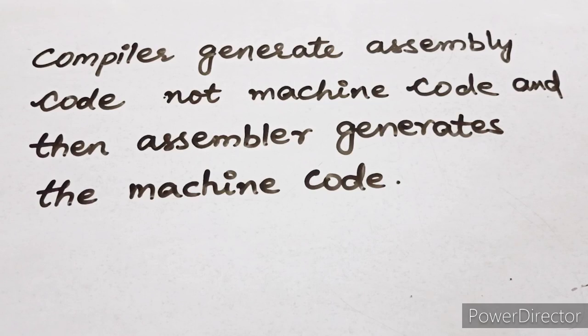The compiler generates assembly code, not machine code, and then the assembler generates the machine code. In C, the compiler never directly converts to machine code. First it converts to assembly, then to machine code, which is machine-understandable language.